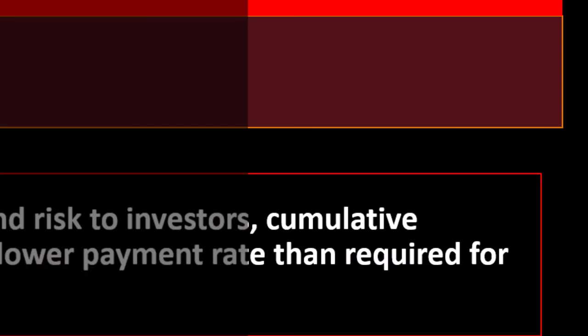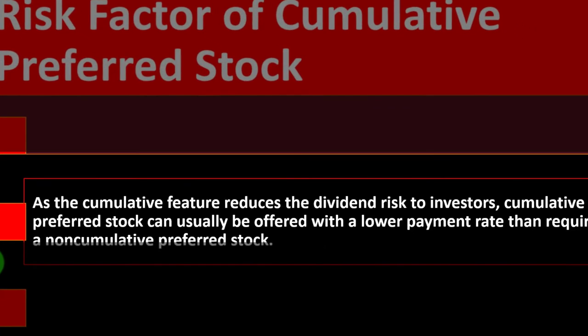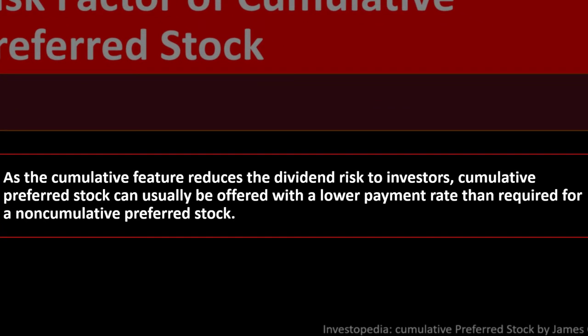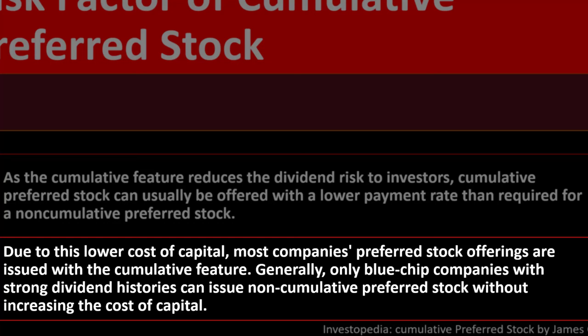As the cumulative feature reduces dividend risk to investors, cumulative preferred stock can usually be offered with a lower payment rate than required for non-cumulative preferred stock. Due to this lower cost of capital, most company preferred stock offerings are issued with the cumulative feature. Generally, only blue chip companies with strong dividend histories can issue non-cumulative preferred stock without increasing their cost of capital.